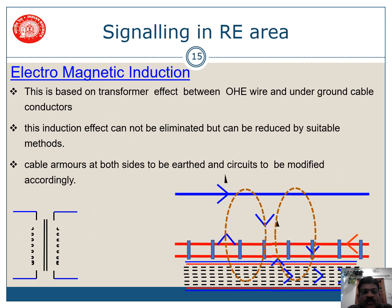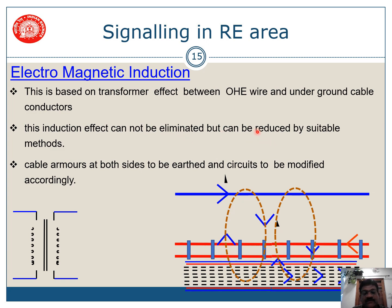Electromagnetic induction is based on a transformer effect — between our OHE wire and the underground cable conductors carrying signal current. This induction effect cannot be eliminated, unlike electrostatic induction which can be fully eliminated by converting to underground cables. Its effect can only be reduced by suitable methods such as earthing cable armors on both sides, modifying circuits to use isolation transformers, and taking cables underground.